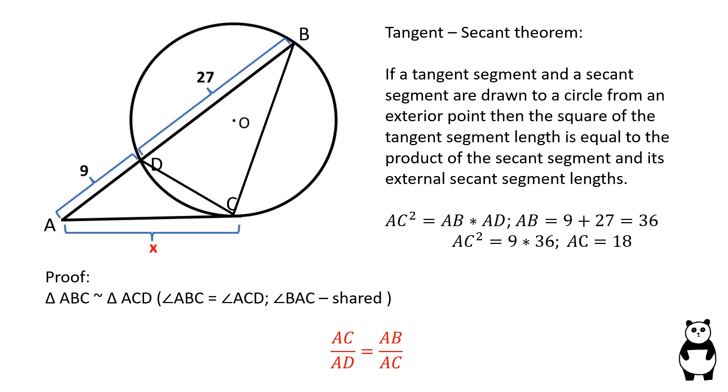In similar triangles, the corresponding sides are proportional. AC over AD equals AB over AC.